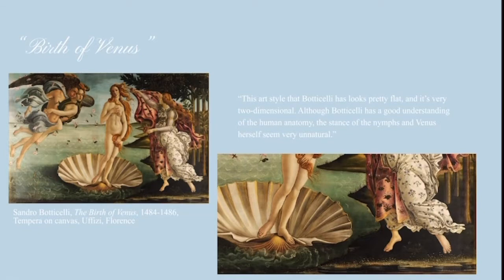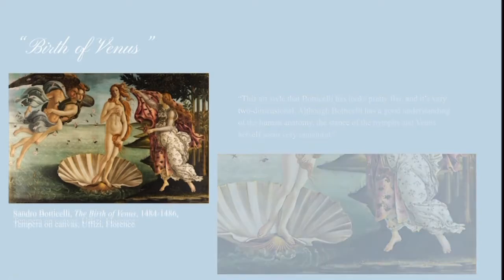The art style that Botticelli has looks pretty flat and very two-dimensional. Although Botticelli has a good understanding of human anatomy, the stance of the nymphs and Venus herself seem very unnatural — almost like they were floating because they were not correctly distributing their weight on their feet. The little detail in the background and landscaping also adds to the two-dimensional feel of the painting. Botticelli never focused on painting with realism, especially in landscapes.